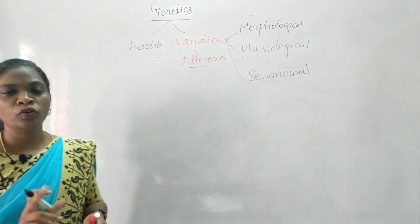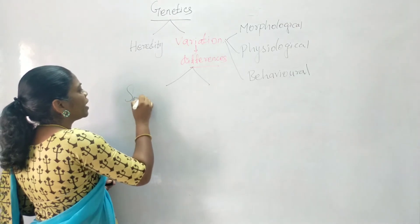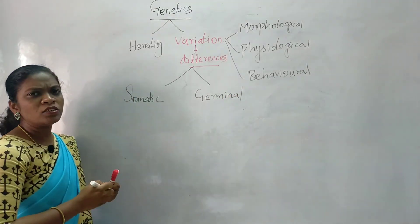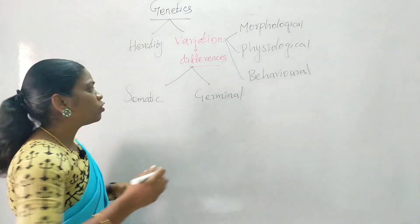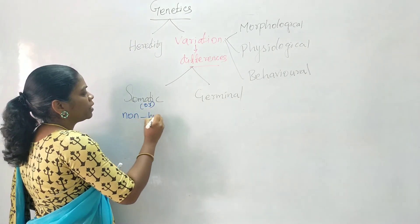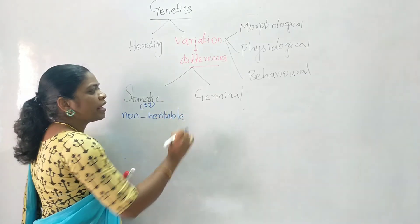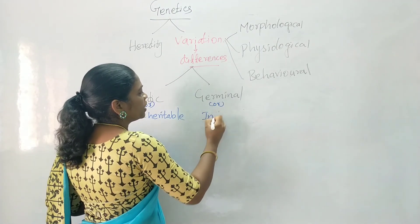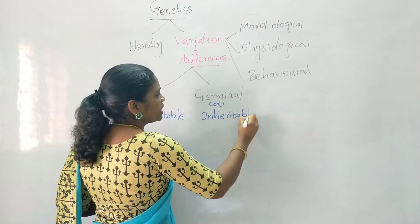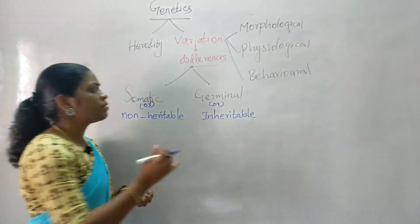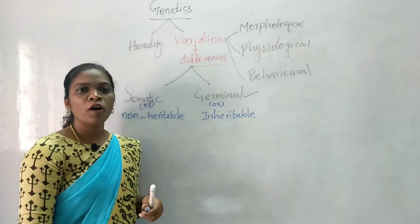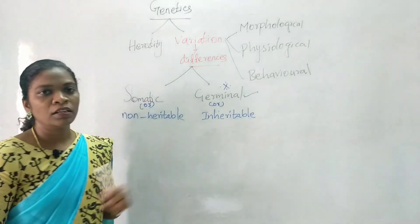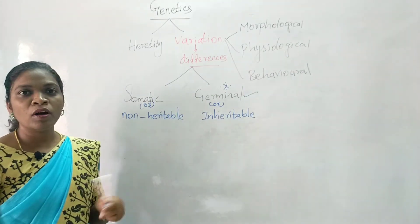We can divide variation into two broad categories: somatic variation and germinal variation. Somatic variations are also known as non-heritable variations — they will not be passed to the next generation. Germinal variations are also known as heritable or inheritable variations because they will be passed to the next generation. When taken to the next generation, they lead to evolution. That is why germinal variation is very important in genetics and evolution.